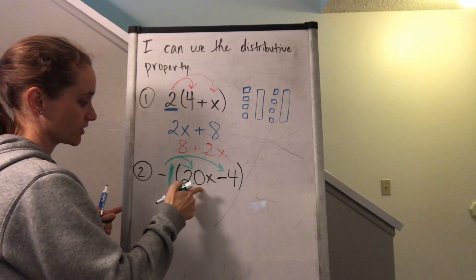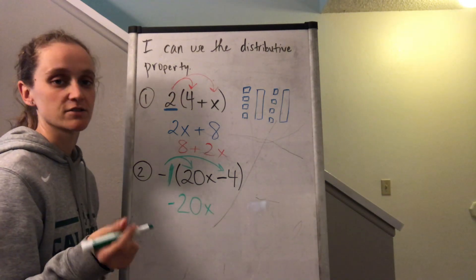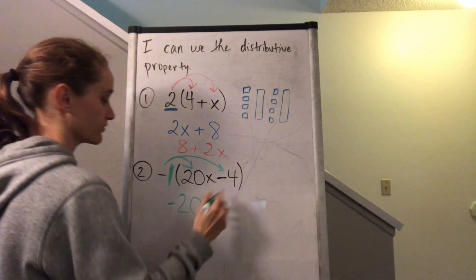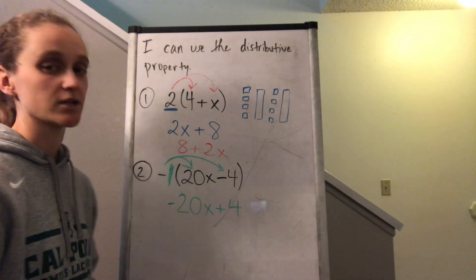So negative one times 20X is negative 20X. Remember, because a negative times a positive is a negative, and then negative one times negative four is a positive, so that would be plus four. So my answer is negative 20X plus four.